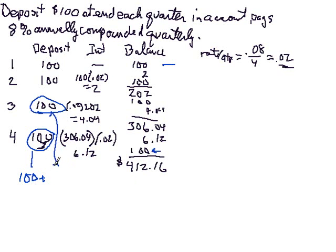This $100, you see, it got compounded. It was part of this 306 and it got compounded once. So remembering how the compound interest formula works, the rate for the quarter was 2%. So this is 100 times 1.02. Now we see the pattern here.